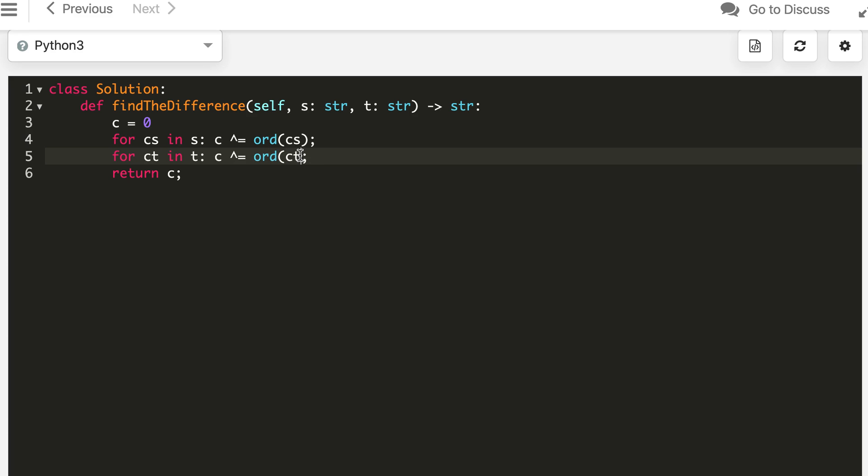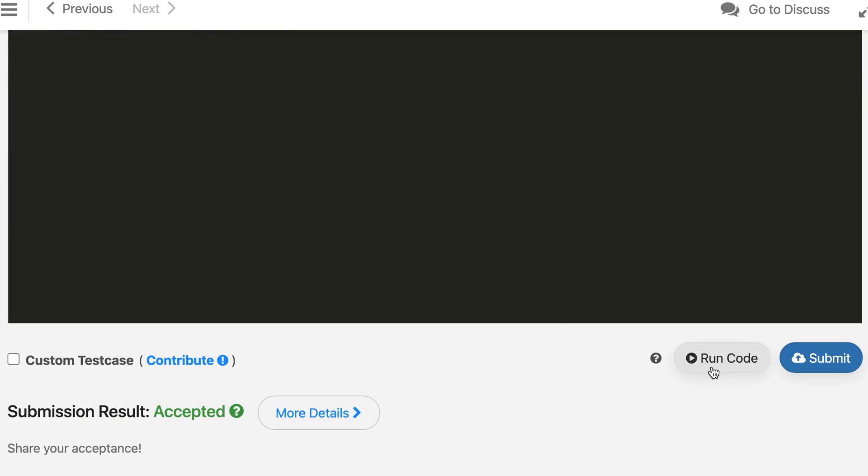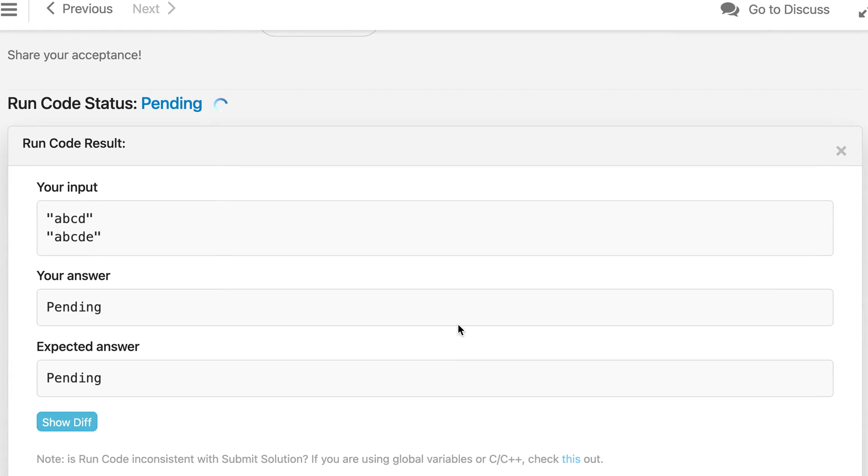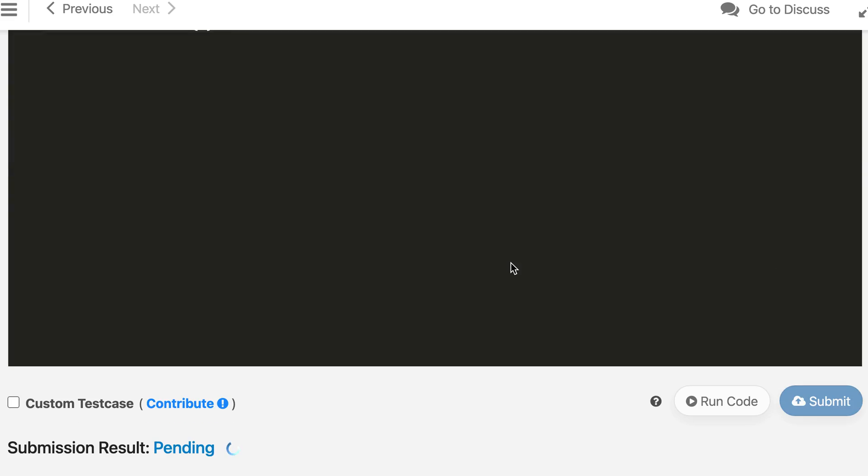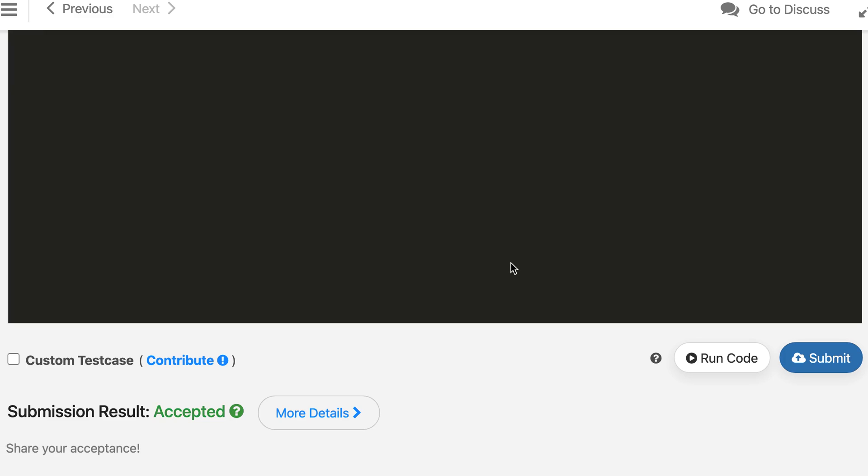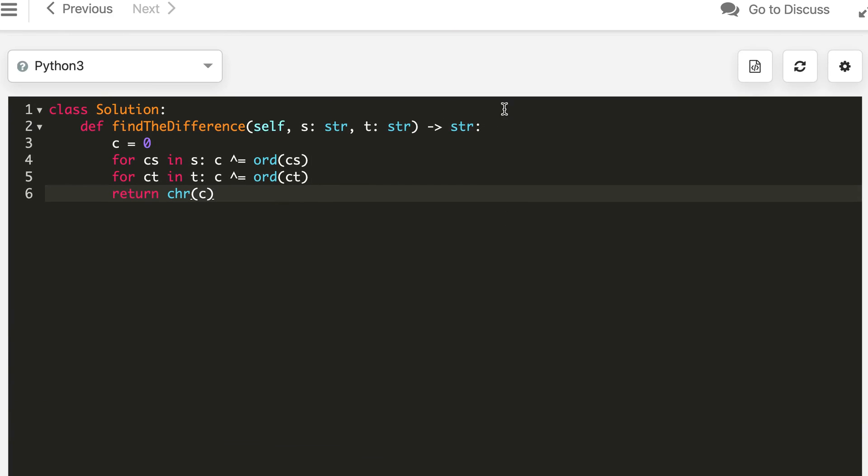So ord gives the ASCII value and chr converts the ASCII to character. We have to return character so we are converting it back to character. And the Python solution is also accepted.